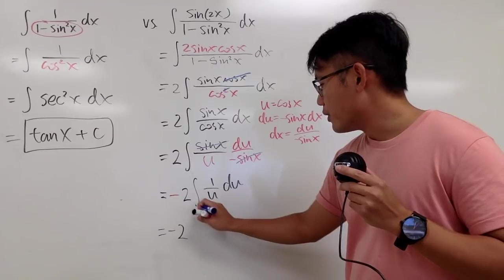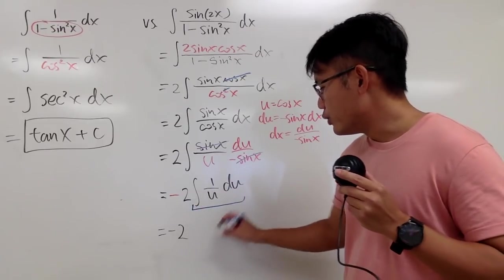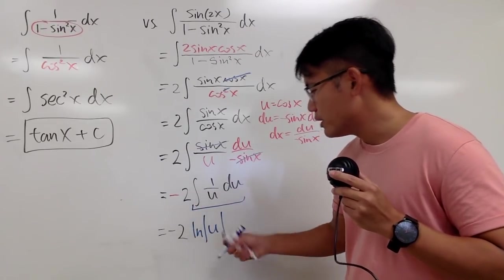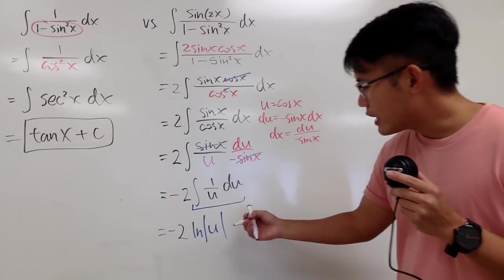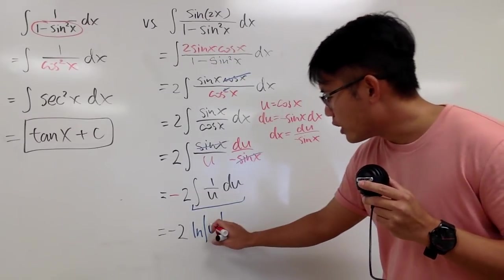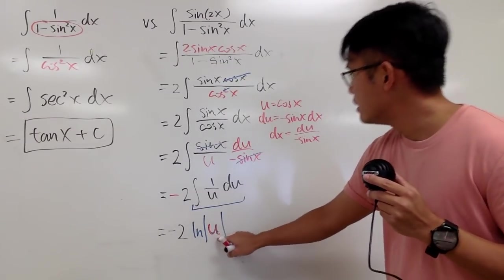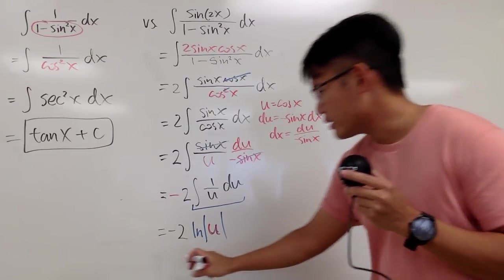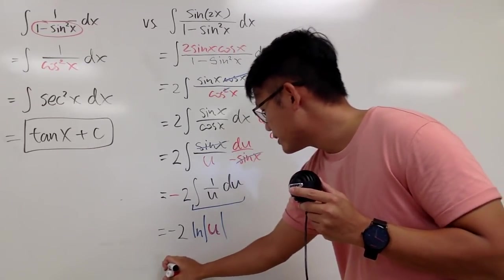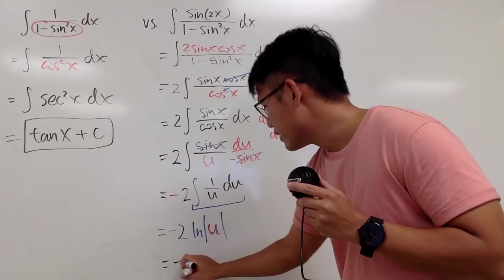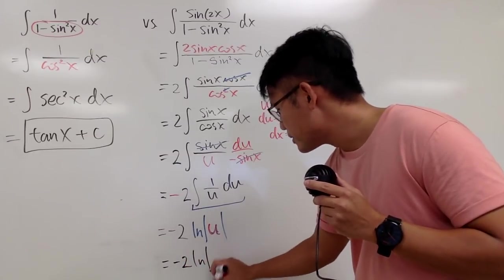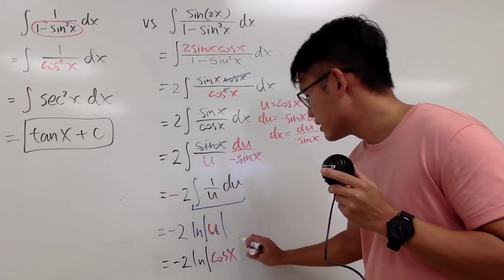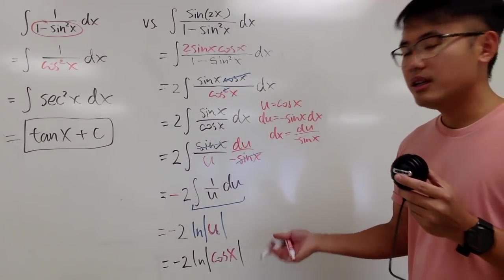The integral of 1 over u in the u-world is natural log of the absolute value of u. And to get back to the x-world, u is cosine x. So I plug back in: this is negative 2 times ln of the absolute value of cosine x.